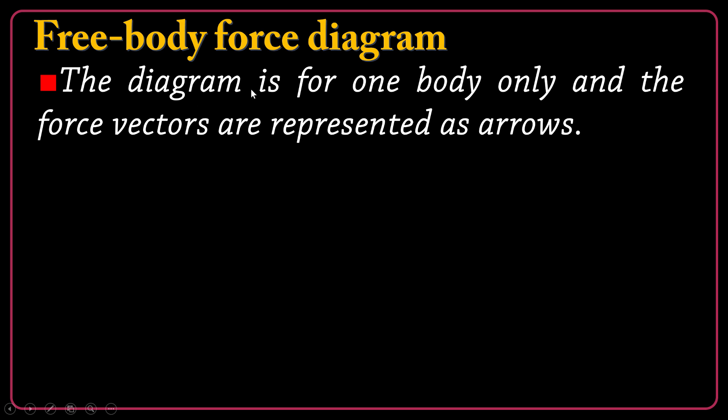The first rule is that the diagram is for one body only, and the force vectors are represented as arrows. One body means that if you have even 10 objects in interaction in a system, we just focus on one of them, then the other, then the other. So for a system including 10 objects, we will have 10 free body force diagrams — one by one, separately.